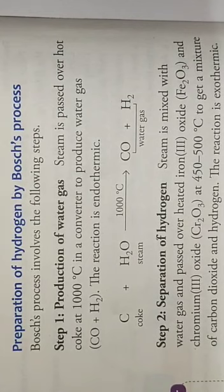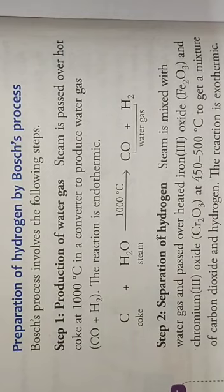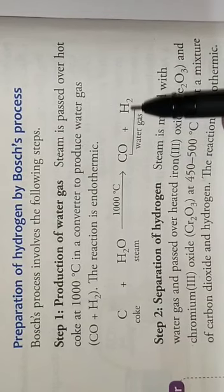Now let us learn about the preparation of hydrogen by the Bosch method. In the Bosch method of preparation of hydrogen, first of all, steam is passed over hot coke at around 1000 degrees Celsius. This leads to the formation of water gas, which is a mixture of carbon monoxide and hydrogen.